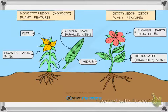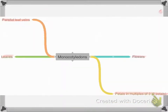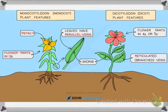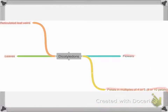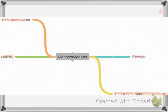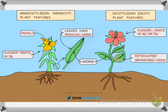For monocotyledons, multiples of three can also mean just three petals. For dicotyledons, petals can be only four or five — not necessarily eight or ten. Questions on monocotyledons and dicotyledons normally appear in Paper 2 MCQ questions.